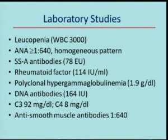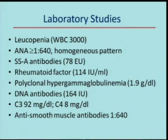Her laboratory studies showed leukopenia, a very high titer of antinuclear antibodies, SSA antibodies, rheumatoid factor, and polyclonal hypergammaglobulinemia. Interestingly, she also had DNA antibodies — many would think this specific for lupus, but we see these in patients with Sjogren's as well. She had a low level of C4 complement and anti-smooth muscle antibodies, which goes along with her autoimmune hepatitis.